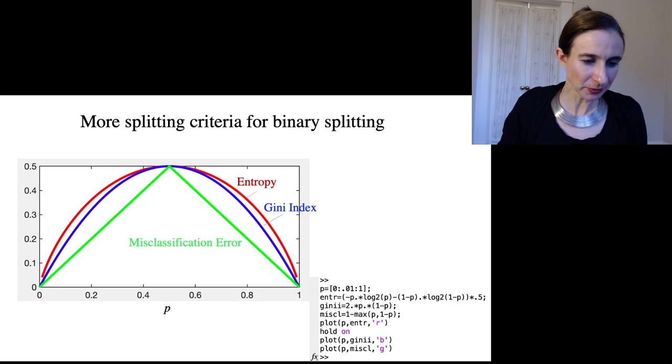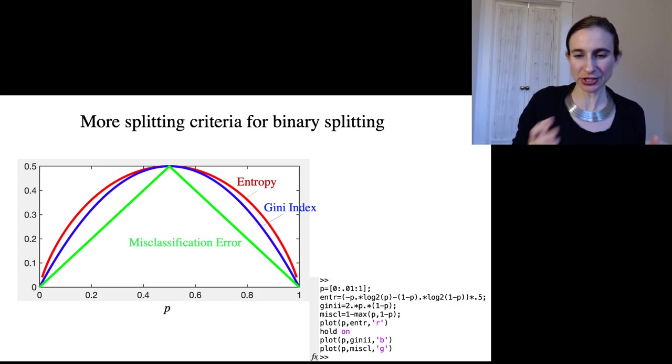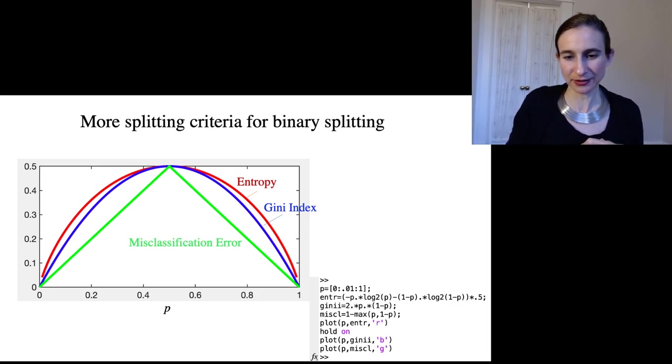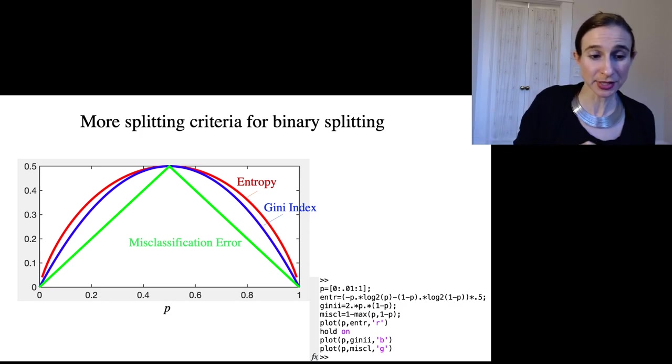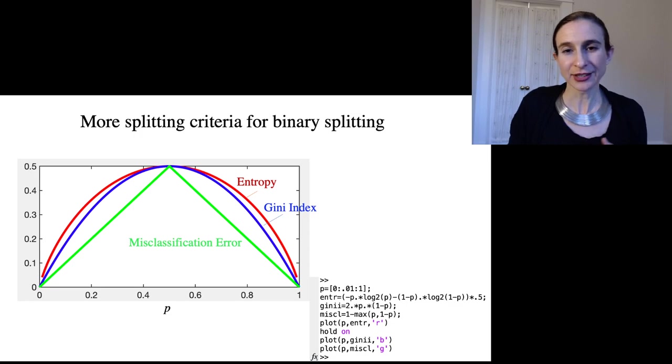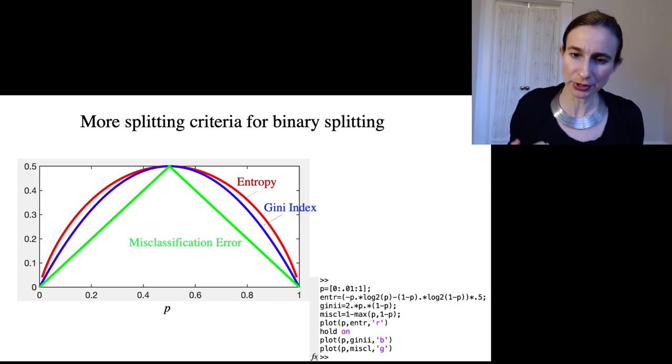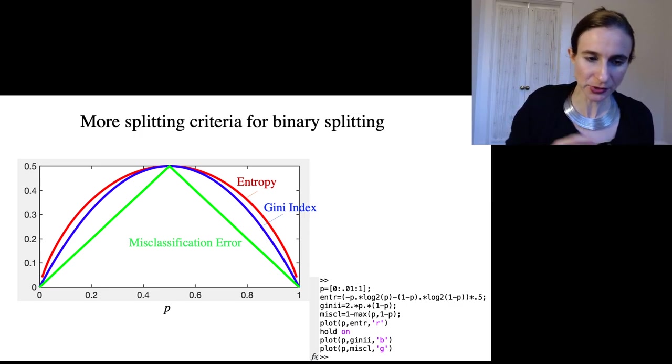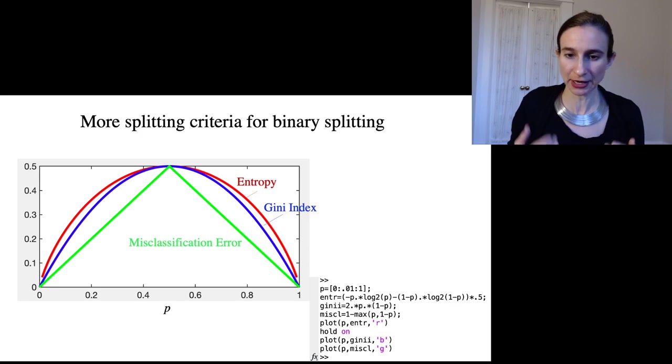I wrote a little bit of MATLAB code that I just put right there on the bottom of the screen. What I'm showing you are these three functions as functions of p, which is the fraction of positives. As a function of the fraction of positives, I've plotted the entropy, the Gini index, and the misclassification error. As you can see, they're actually very similar to each other. In many cases it doesn't really matter which one you use because they're going to split the data fairly similarly to each other.